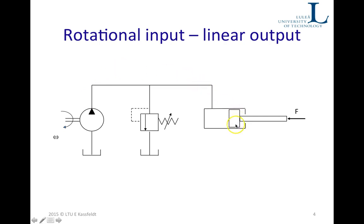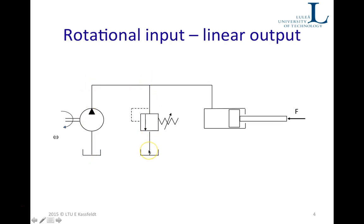When the piston reaches the end position, the pressure will continue to rise in this chamber due to the fact that we still have flow going in this direction. But as soon as the pressure is high enough, the pressure relief valve will open. Instead, we have fluid from the pump going through the pressure relief valve and back to the tank again.